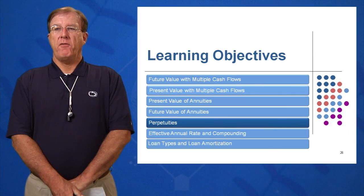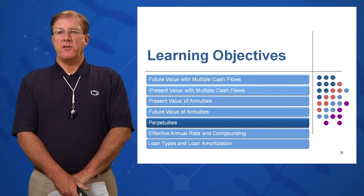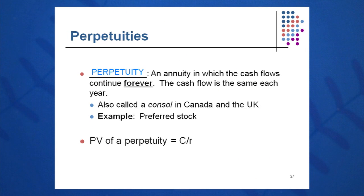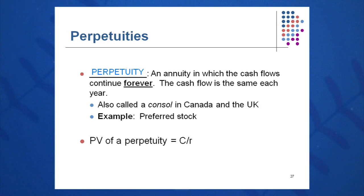Learning objective number 5 in session 6 brings us to perpetuities. A perpetuity is an annuity where the cash flow continues forever — the same amount each year. An example might be a preferred stock dividend that pays you the same amount each year, hopefully forever.